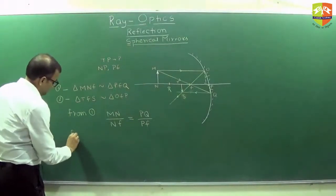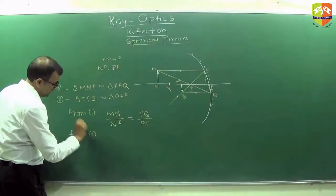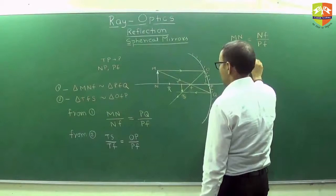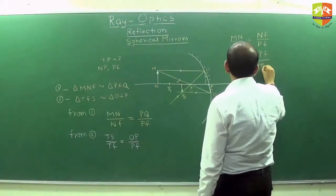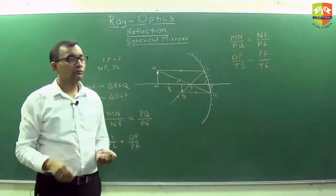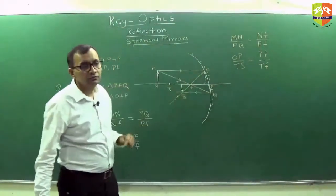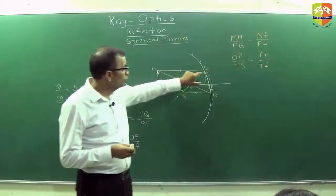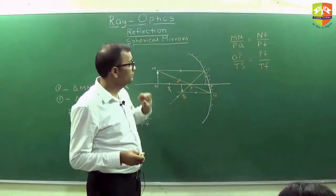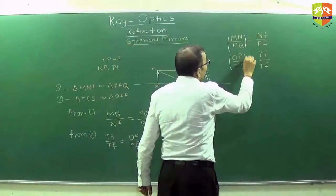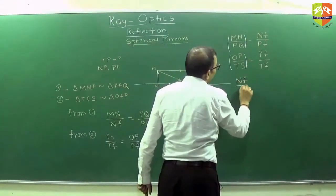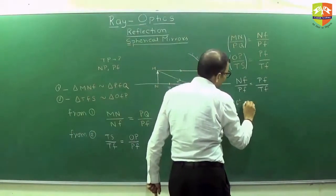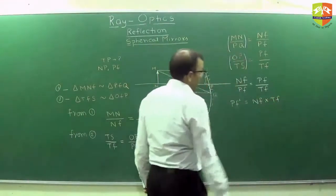Do it yourself — try to come up with the equations. Is the left-hand side for both the same or not? MN is equal to OP, and PQ is equal to TS. So the left-hand sides are the same. So I can equate the right-hand sides: NF by PF is equal to PF by TF. Therefore PF squared is equal to NF multiplied by TF.